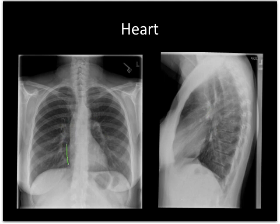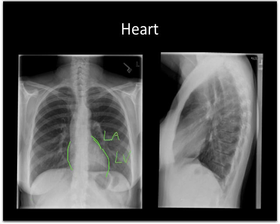Turning my attention to the heart, I'm going to look at the size of the heart. The cardiothoracic ratio is the widest internal dimension of the chest divided by the widest dimension of the heart, not including an epicardial fat pad. Then I also want to look at individual chambers — we look at the right atrium, the left ventricle, and the left atrium on the PA study.